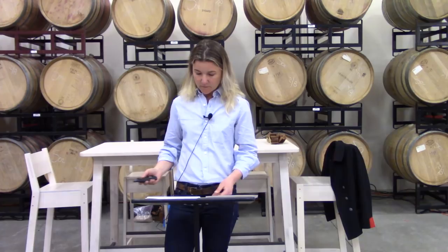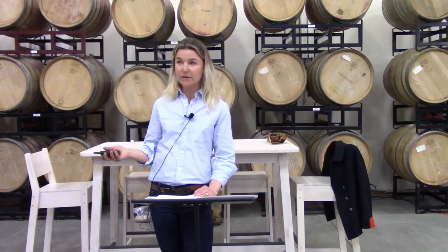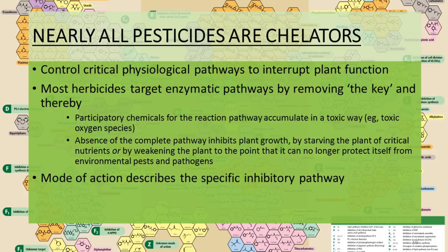When we want to affect the physiology of a plant, it's actually very simply done by controlling the availability of minerals. To stop enzymatic function, you pull the mineral key for that enzyme — and that process is called chelation. Almost without exception, every pesticide on the market is a chelator of some kind.